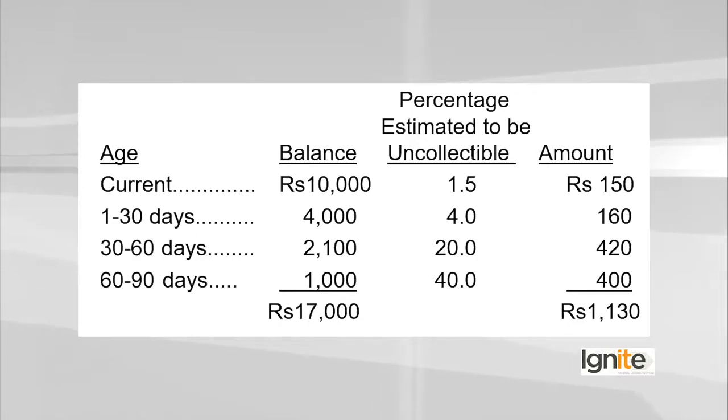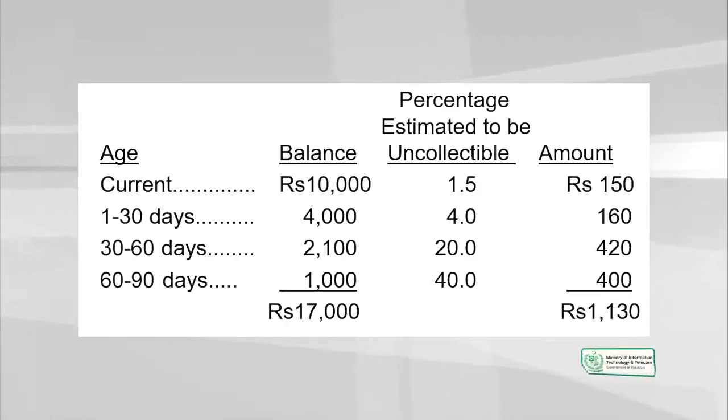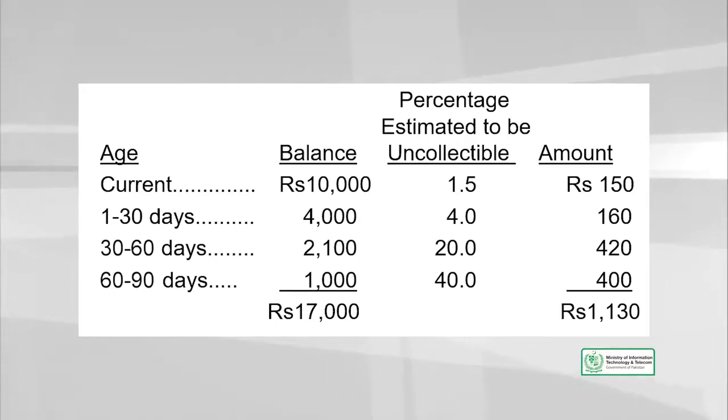When we record bad debt, we will not change the account receivable balance directly. Instead, we will create a new account which we call allowance for bad debt, and we will expense it out. When we think that some funds may go towards being uncollectable, we record that estimate but we do not touch the amount in accounts receivable. Account receivable stays as is, but we hold an estimated amount in the new allowance account.